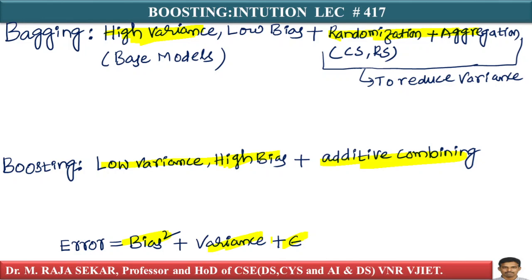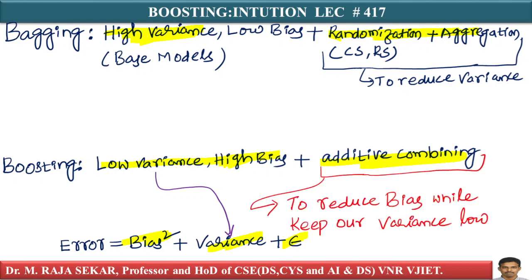In boosting, variance is already low. So we want to reduce our bias while keeping variance low. We do this using additive combining. We will look into one specific technique called gradient boosting — a very popular and powerful technique.